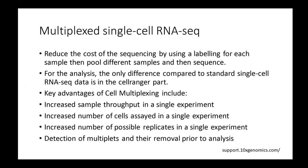For multiplexed single cell RNA-seq, this is what 10x would advertise — it's nowadays mainly used because it reduces the cost of sequencing. For the analysis, the only difference compared to standard single cell RNA-seq will be in the Cell Ranger part, so at the end you will get output folders and matrices of feature barcodes. The key advantages are that it increases sample throughput, the number of cells assayed in a single experiment, and the number of possible replicates.